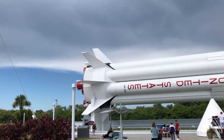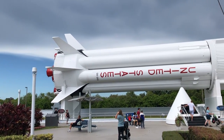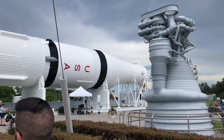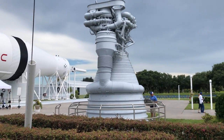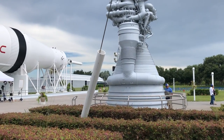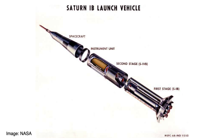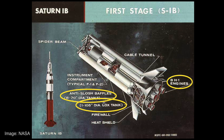This is footage filmed on July 20th, 2019, on the 50th anniversary of the Apollo 11 moon landing at Kennedy Space Center in Florida. This video should help you get a sense of scale of the Saturn 1B rocket. Let's take a look at a schematic of the Saturn 1B so that we understand its major components. The Saturn 1B had two stages and the spacecraft sat above the second stage.